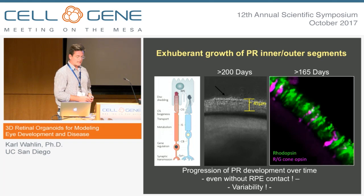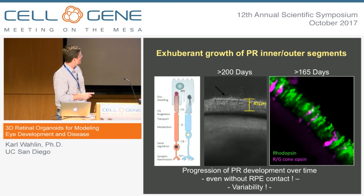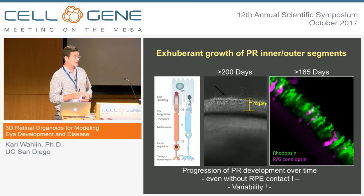Most exciting for me — since I'm more interested in photoreceptors — is the observation that we can get both rods and cones in the same system. We don't get a macula or fovea, but we do get both cell types. We have these robust, exuberant inner and outer segment structures that grow to about 45 microns. They become self-limited and know to stop growing, and this happens even in the absence of RPE cells, which I find pretty surprising.